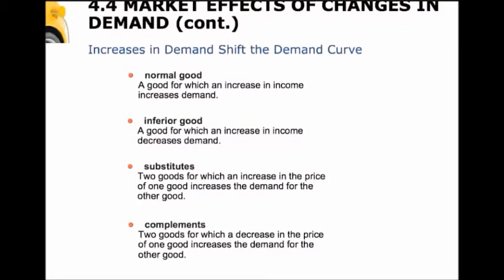Now first let's define some terms so we know what we're talking about when we look at different types of goods. A normal good is a good for which an increase in income increases demand — most goods you can think of are normal goods. But for some goods, when there's an increase in income you buy less, and that's a decrease in demand — that's called an inferior good. We compare different goods to each other; sometimes goods are called substitutes. For pizza, a good substitute might be tacos or sandwiches. Complements are two goods that go together.